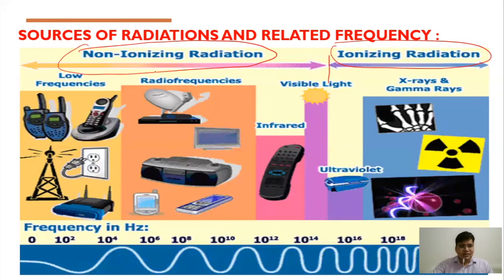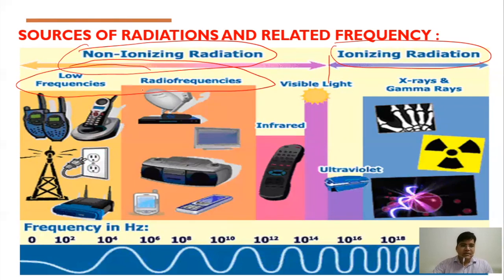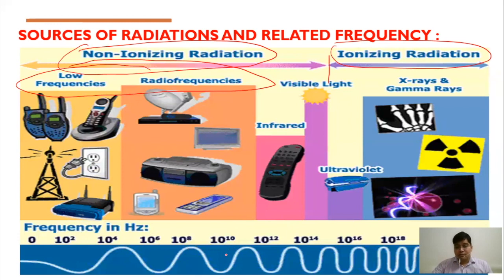We are majorly dealing with non-ionizing radiation in daily life — mobile phones, mobile towers, and microwave frequencies. WiFi operates at 2.5 GHz, which is 10 to the power 9. That means within one second, 2.5 × 10⁹ cycles are completed. You can estimate this is a very high frequency, although it is lower compared to gamma rays and X-rays which have frequencies in the range of 10²². But it is also harmful.